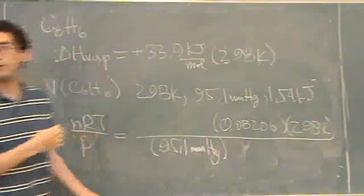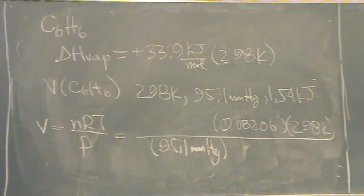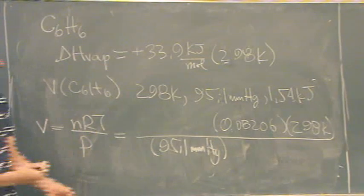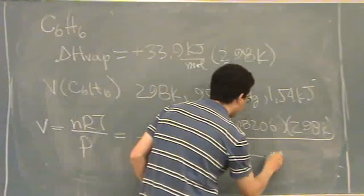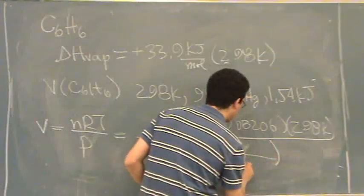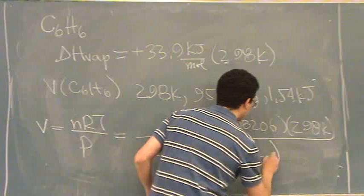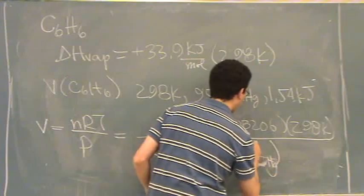And we've got, always, when we have the ideal gas law, convert to atmospheres for pressure. So we've got 760 millimeters mercury for every one atmosphere.